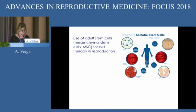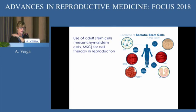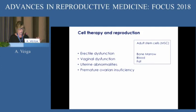Going to the final part of my talk: I'll tell you about the actual use of adult stem cells — essentially mesenchymal cells. These cells are not pluripotent; they are multipotent. They are different from the ones discussed before, and some are already being used in cell therapy in reproduction. They are being used for four different indications: erectile dysfunction, vaginal dysfunction, uterine abnormalities, and premature ovarian insufficiency. Most of this is still at the experimental level.